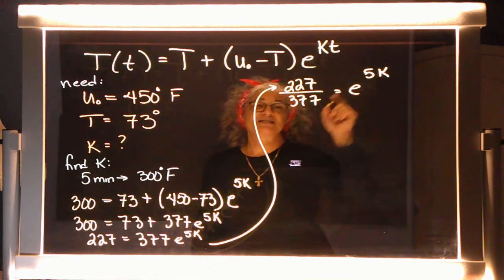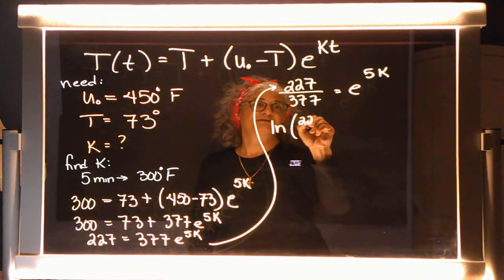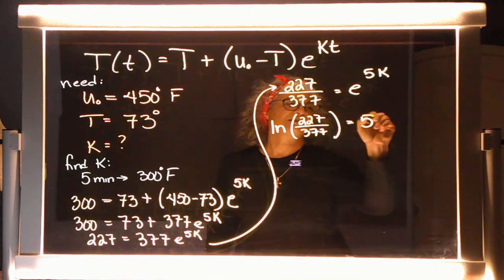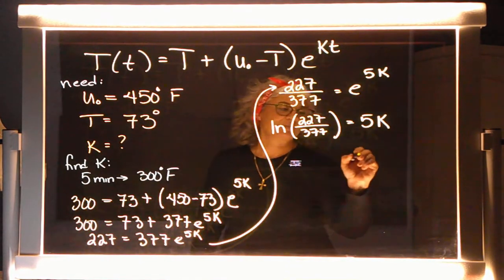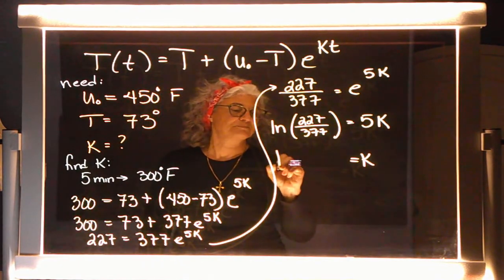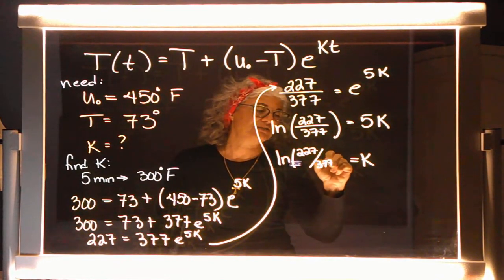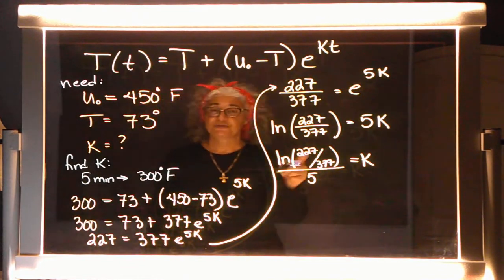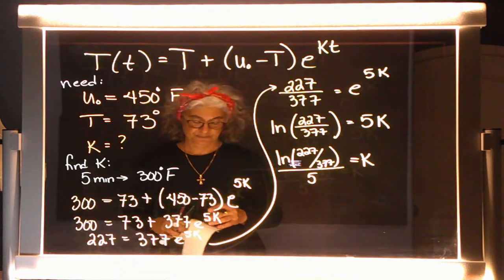And then, finally, I've got to take the natural log, just like in the past. And then, to finally get K by itself, I have to divide both sides by 5. So, I've got the natural log of this lovely fraction. And again, we're not rounding until the end, so I'm not even going to bother with the decimal. But if you want to punch that into your calculator, you should find that as a negative number.